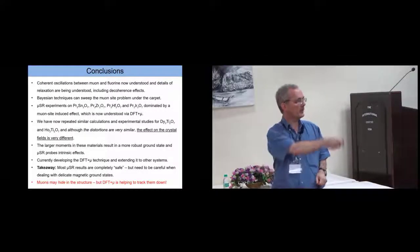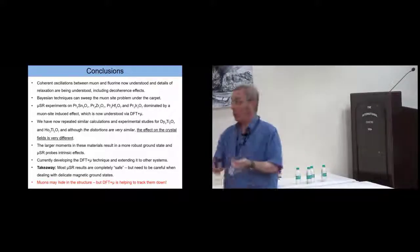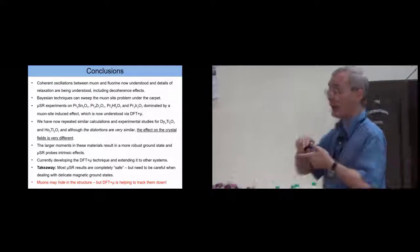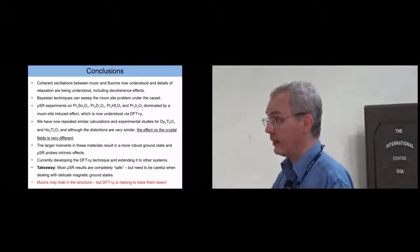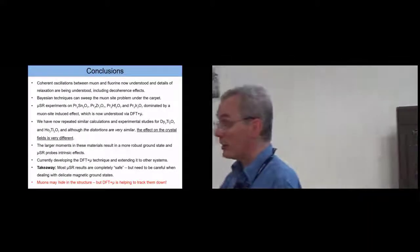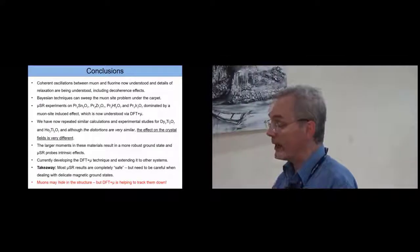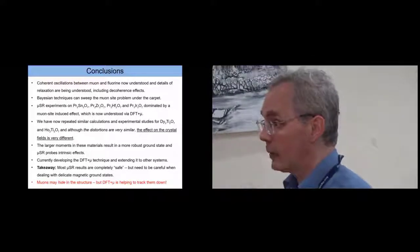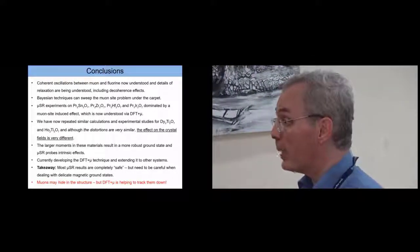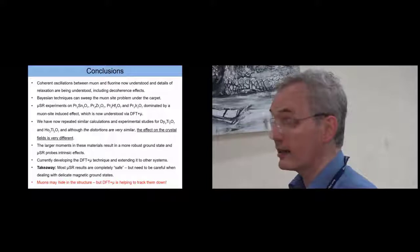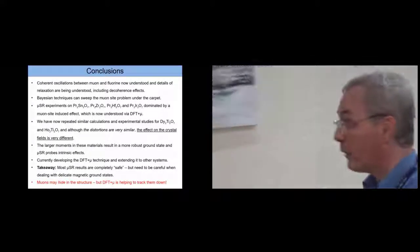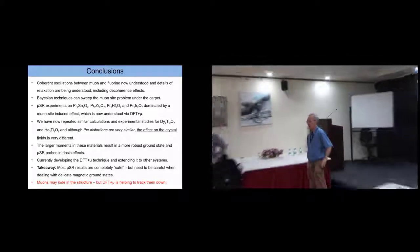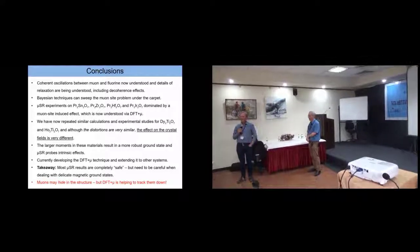So to solve the muon site problem, we either ignore it and use this Bayesian method, we use fluorine to localize the muon, or we can now use DFT plus mu to really get very good understanding of what the muon site is to understand the distortions. In most cases, the distortions have no effect. But we have now found one case where it does. So I'll finish there. Thank you. Thank you very much. Thank you for this.